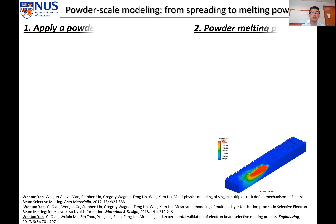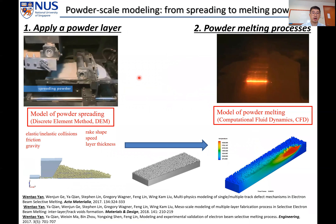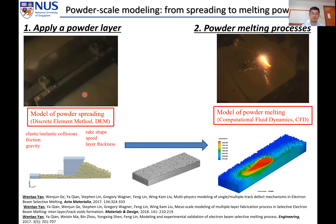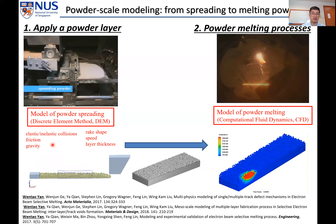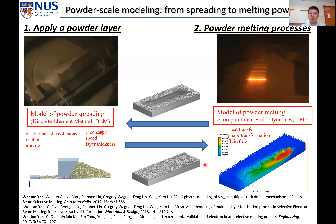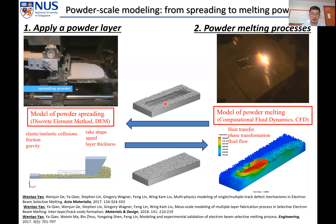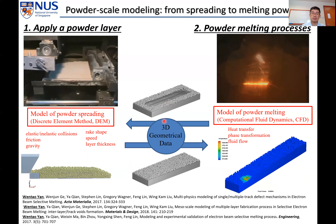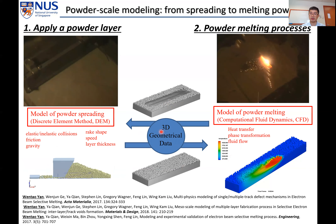For process modeling, there are mainly two procedures: applying a powder layer, and the powder melting process. We developed a powder spreading model using the discrete element method, where we simulate powder motion under elastic or inelastic collisions, friction, and gravity. The powder bed geometry is implemented into the powder melting model, and the solidified track shape is fed back into the powder spreading model to apply another layer, reproducing the repeated process as in experiments.